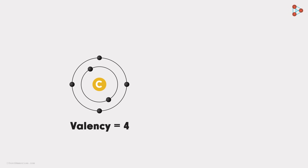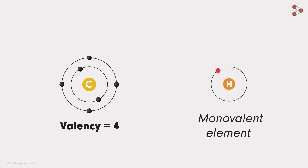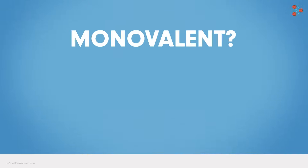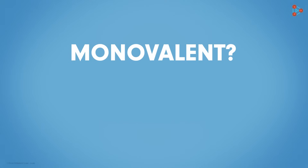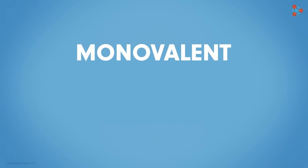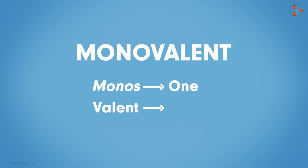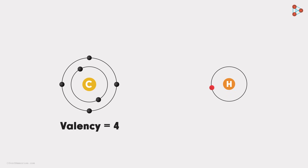So if we have a monovalent element like hydrogen, how will the bond formation take place? What do we mean by monovalent? We know 'mono' means 1, and 'valent' refers to valency — that means elements having a valency of 1. It needs 1 electron for stability. So how will the bond be formed?